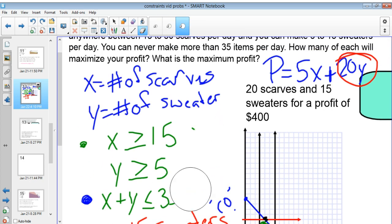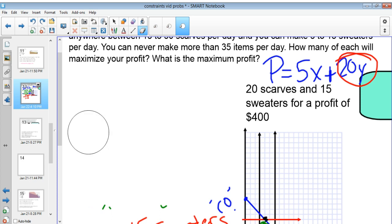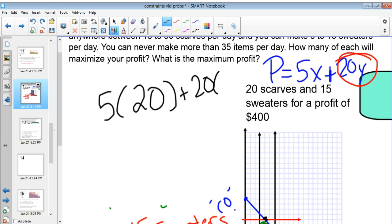To figure that out, all I would have to do is plug it back in and I would get five times 20 because 20 scarves plus 20 times 15. And that ends up with me having a total of $400.